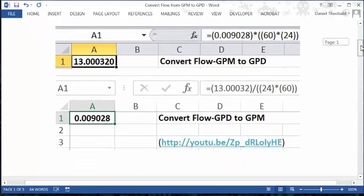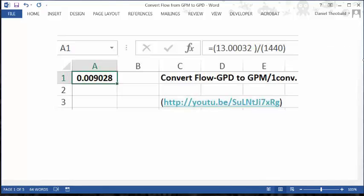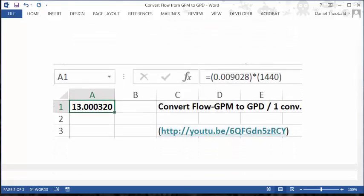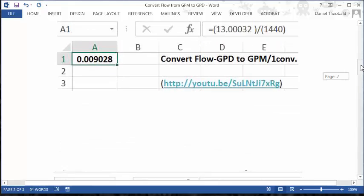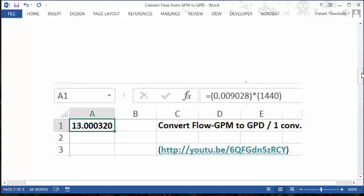So I have two more videos here which do the same thing, except using single conversion factors. The first one converts from GPD to GPM with one conversion factor. The reverse of that is another bonus video converting from GPM to GPD, one conversion factor. You see, we're using the same basic data, just changing the math operator. Up here we were dividing, down here we're multiplying.